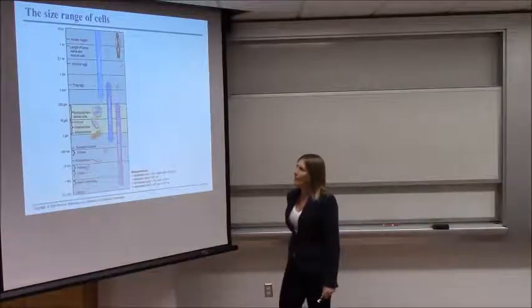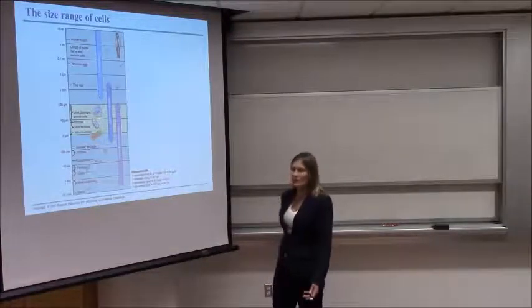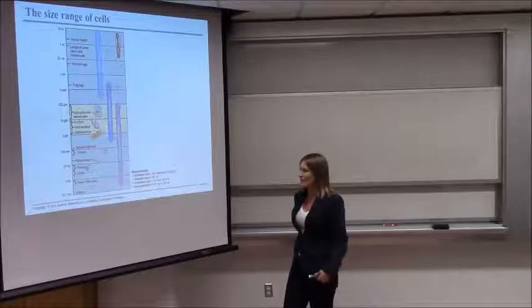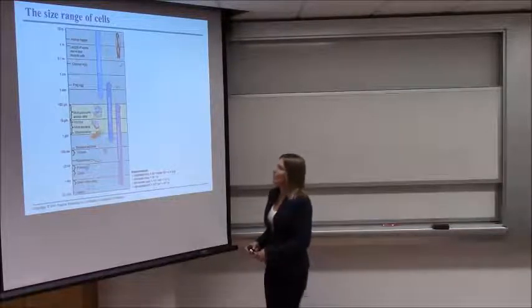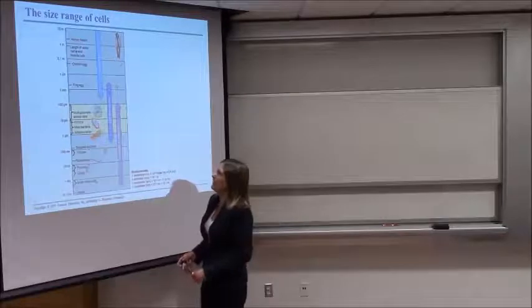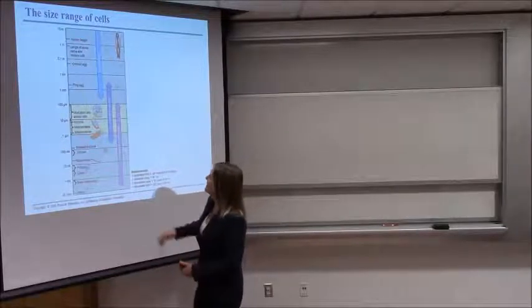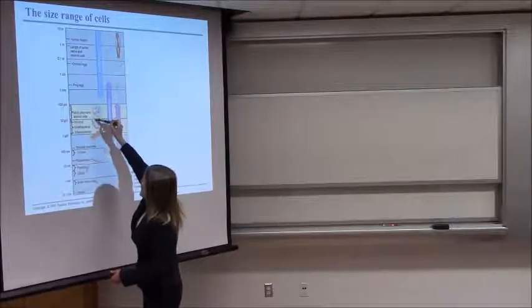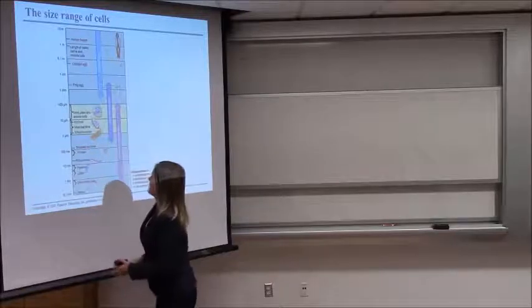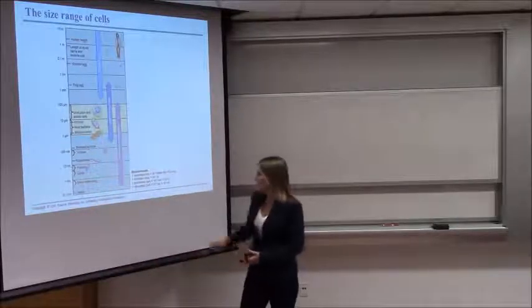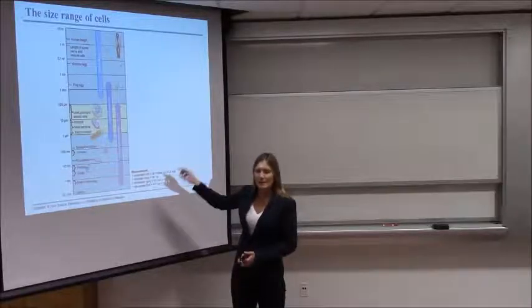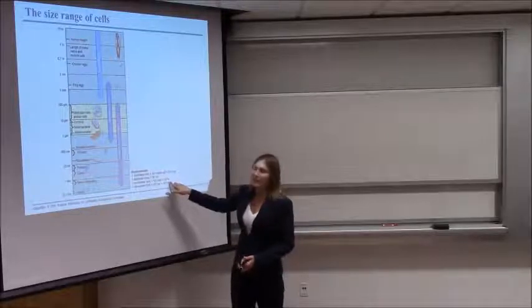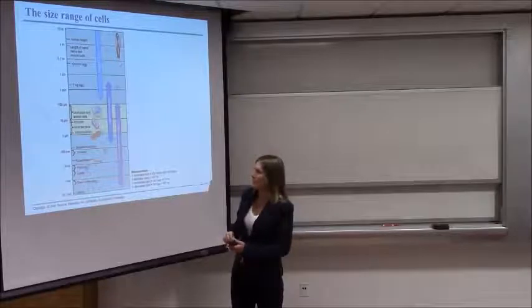This is a chart of cell size, showing things relative to each other. I don't expect you to memorize these cell sizes — I just want to give you a picture of relative sizes. You can see a chicken egg, frog eggs, and then going down to cells. The basic plant or animal cell is about 100 micrometers in length. A micrometer is ten to the minus six — that's one one-millionth of a meter, so it would take one million of those to equal a meter.